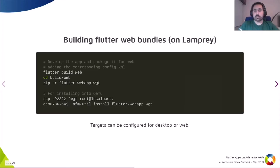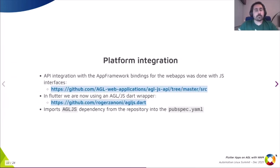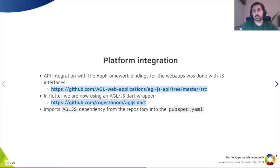The config.xml file defines the name of the application and the permissions that will be used — there's additional information about that in the earlier talk I mentioned about web apps. Besides running UI functionalities, platform integration is needed to talk with the layers of AGL and APIs providing access to certain functionalities. In web applications in the HTML5 image, this is done using the application framework APIs, which we wrapped with a JavaScript library called binder.